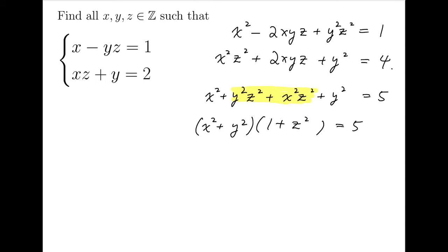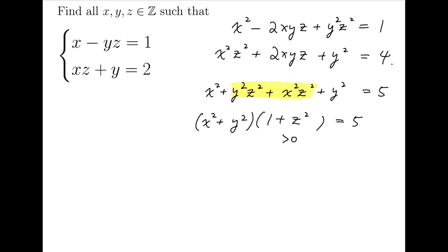Now the magic comes. We have managed to factorize one side and the other side is a prime. Moreover, the terms in left-hand side are all obviously non-negative. In particular, 1 plus z squared is even positive. So we can skip the negative factors cases. Here are the cases that we need to take care of.